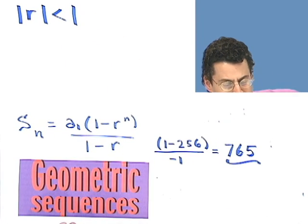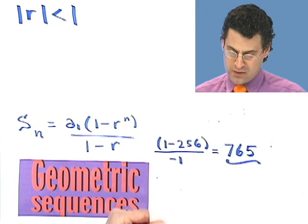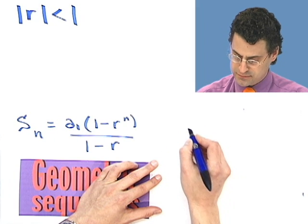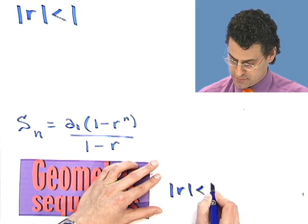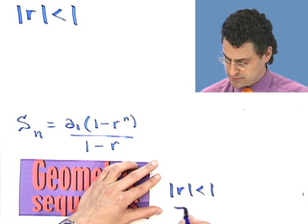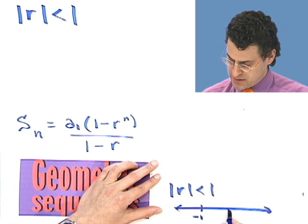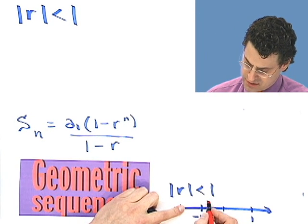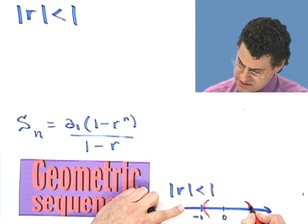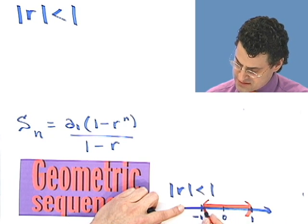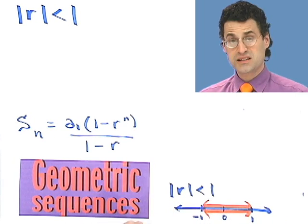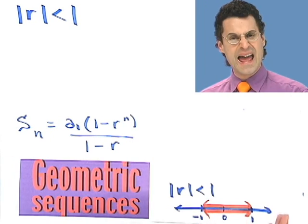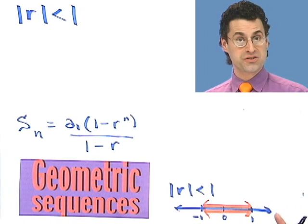What does that mean? It means that r is some number between negative 1 and 1. If the absolute value of r is less than 1, that means on a number line it's between minus 1 and 1 — it doesn't equal negative 1 or 1, but it's all points in between. So that ratio is something like a half, a third, or negative two-thirds.